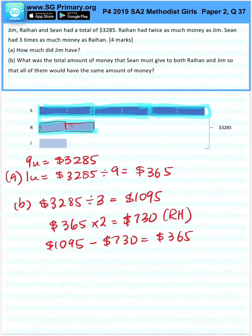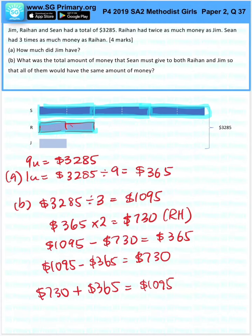The amount of money that Sean would need to give is $730 plus $365, which will be $1,095, in order for all of them to have the same amount of money.